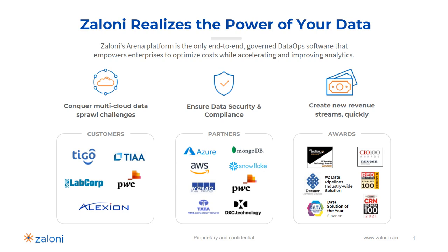We help you manage and govern that supply chain for this most important, critical, competitive, differentiating product called your data. We focus on really big global companies who have tons of data, tons of sources of data, plus regulatory concerns. Customers include financial services firms like TIA Nuveen and Toronto Stock Exchange, pharma companies like LabCorp and Alexion, telcos like DoTelco in the Emirates and Tego in Latin America, and firms that handle other people's data like PwC and KPMG.